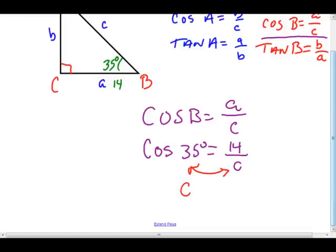C will go to the left side, 14 will stay in its place, and cosine of 35 goes on the right. So in your calculator, you're going to take 14 divided by cosine of 35. The answer you're going to get is 11.468128.